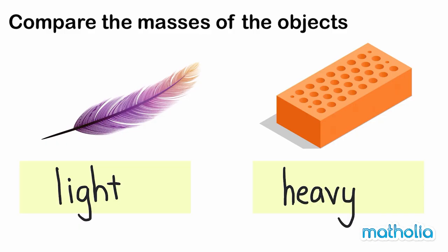Heavy objects have more mass than light objects. Light objects have less mass than heavy objects.